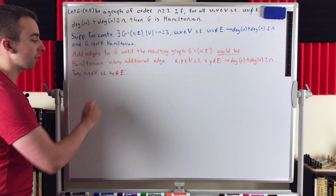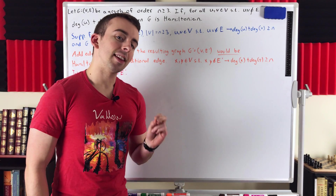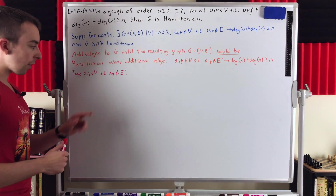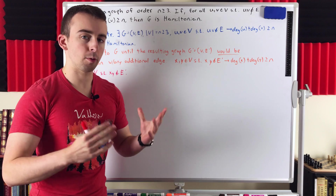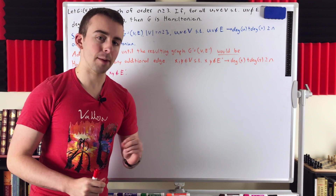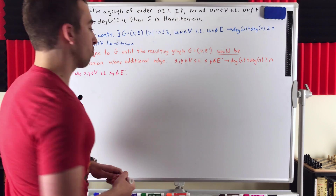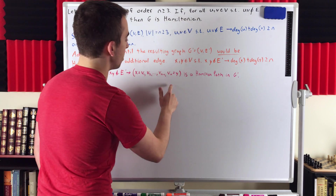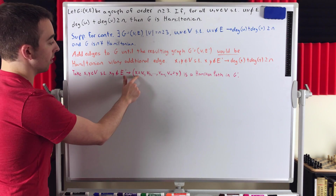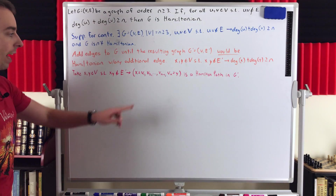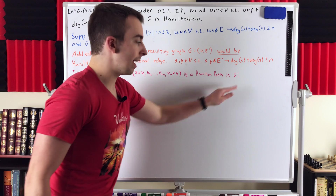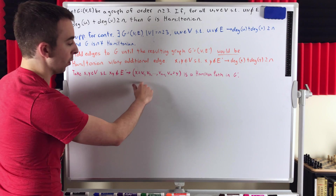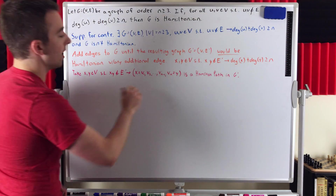So if we join X and Y, we create a Hamiltonian cycle. That means there already must be a Hamiltonian path from X to Y in G prime — otherwise, adding an edge joining X and Y would not create a Hamiltonian cycle. So let's write that path out. We label the vertices of G prime as V1 through Vn, where V1 is vertex X and Vn is vertex Y. This is a Hamiltonian path from X to Y in G prime, containing all N vertices: V1, V2, all the way through Vn.